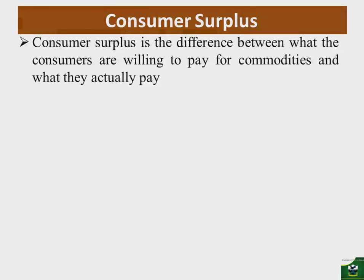Consumer surplus is the difference between what consumers are willing to pay for commodities and what they actually pay. Consider a simple illustration with a demand curve and an equilibrium price. If John Banda was willing to pay a higher price, the difference between what he was willing to pay and what he actually pays gives him the surplus. Similarly, if Mary is willing to pay more but ends up paying the equilibrium price, that difference gives Mary her surplus.